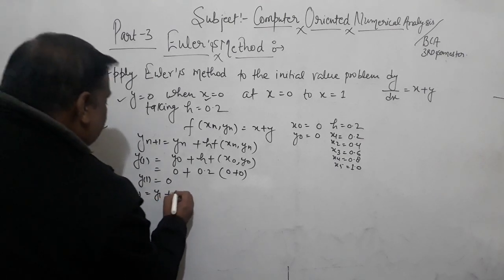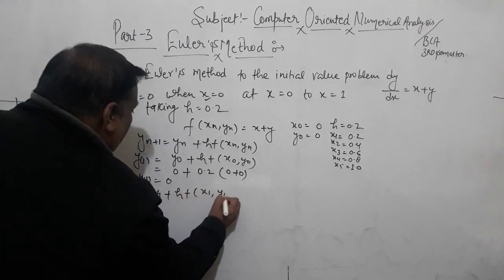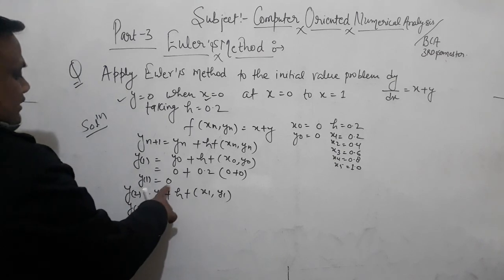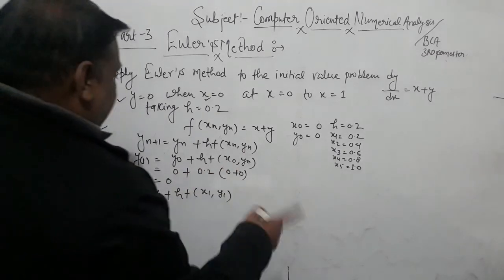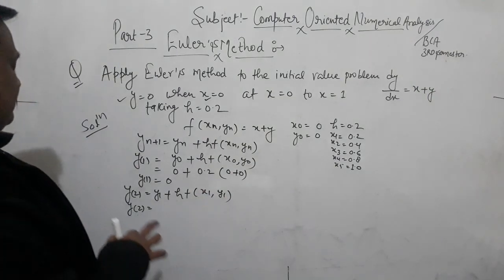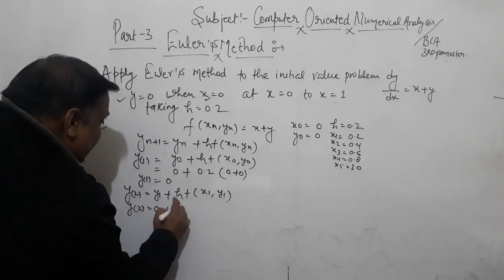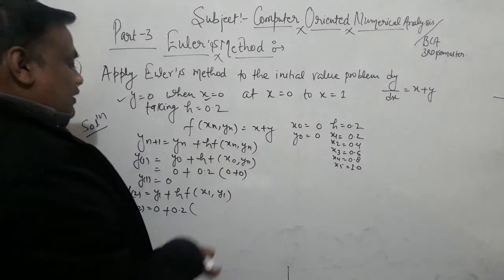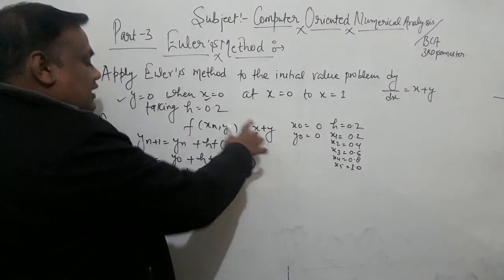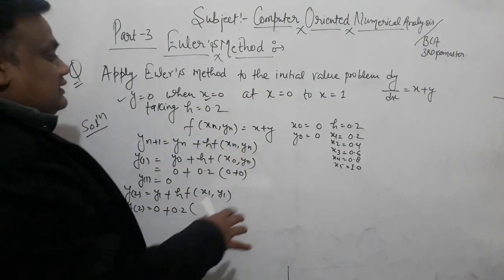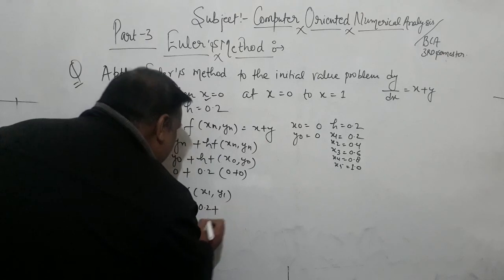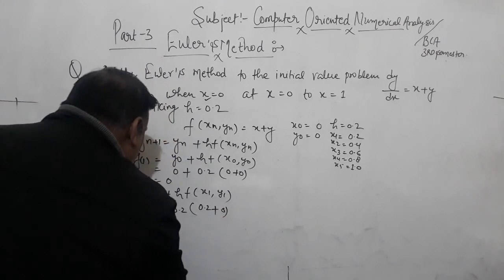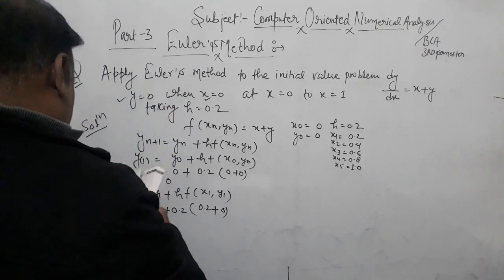Y2 is equal to Y1 plus h·f(x1, y1). H is 0.2. The function f means x plus y. So x1 is 0.2 and y1 is 0.0, giving us y2 = 0.04.